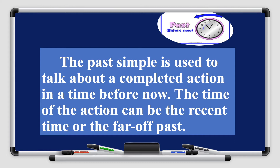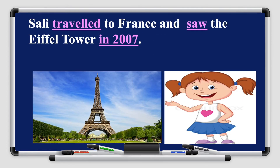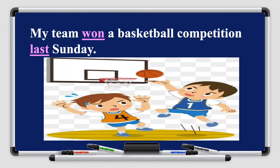Let's take the first example: 'Sally traveled to France and saw the Eiffel Tower in 2007.' We have two verbs — traveled and saw — and they are both in the past simple tense. We have 'in 2007' indicating this happened in the past. Another example: 'My team won a basketball competition last Sunday.' The verb is 'won' in the past simple tense, and 'last Sunday' indicates the past.